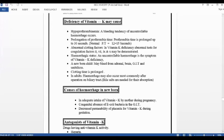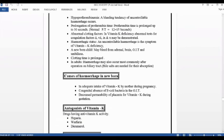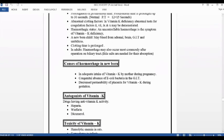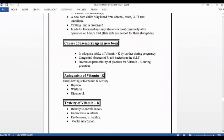Hemorrhage status. Uncontrollable hemorrhage is a symptom of vitamin K deficiency. Blood clotting is affected, hemorrhage cannot be controlled. This is the symptom. Newborn child may bleed from adrenal, brain, GIT and umbilicus. So newborn can have bleeding from gastrointestinal tract, umbilicus and adrenal gland.